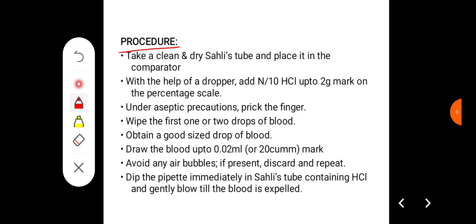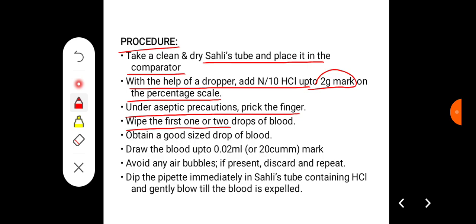The procedure: take a clean and dry Sahli tube and place it in the comparator. With the help of a dropper, add N/10 HCl up to the mark of 2 grams on the percentage scale. Under aseptic precaution, prick the finger. Wipe the first one or two drops of blood and then obtain a good sized drop of blood over the fingertip.